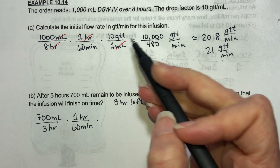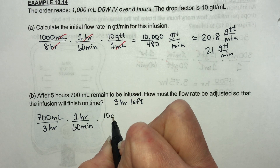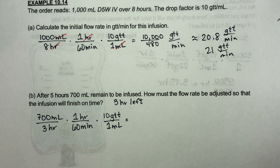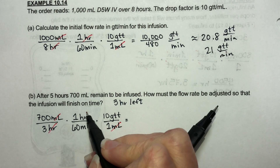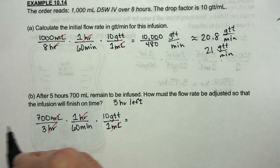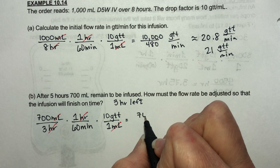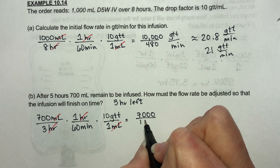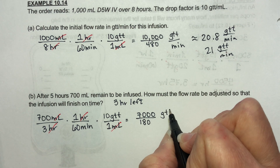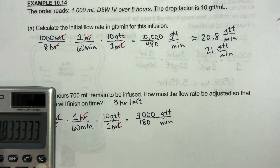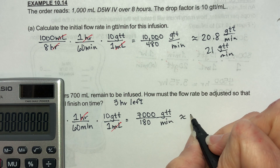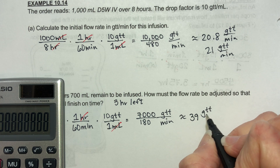The drop factor hasn't changed either, so it's still 10 drops for each 1 milliliter. Milliliters and hours all cancel. Multiplying across the top gives 7,000; the bottom is 3 times 60 which is 180. This is in drops per minute. Calculating 7,000 divided by 180 gives approximately 39 drops per minute.